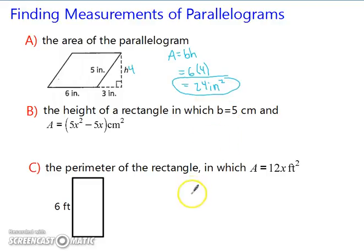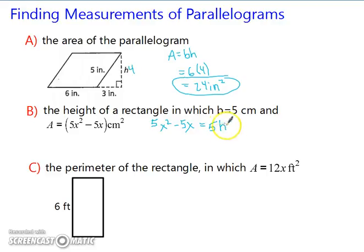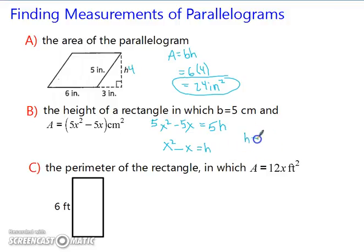Take a moment and pause the video and try the next two on your own. Now let's try them together. We have the area, and we know the area is base times height. So we have 5x squared minus 5x equals base times height. We want to get h by itself, so we divide both sides by 5, and we end up with x squared minus x equals h. Therefore your height is the quantity x squared minus x, in centimeters.